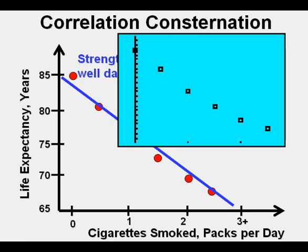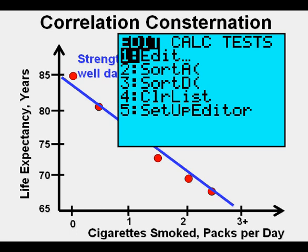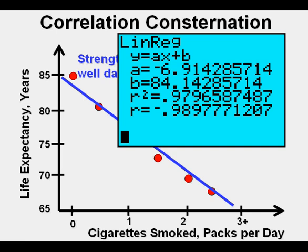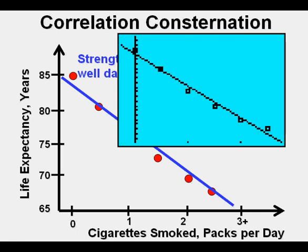Now let's find the line of best fit and the correlation coefficient. Press STAT, arrow once right to the CALC menu, scroll to 4 Linear Regression, and press ENTER twice. Here we have the line of best fit: Y equals about negative 6.9X plus 84. Note that the R value, or correlation coefficient, is very close to 1 — about 0.99 — when 1 is a perfect correlation. The negative sign in front means it's a negative correlation. Here is the line of best fit — note how closely it resembles the line drawn in blue earlier.